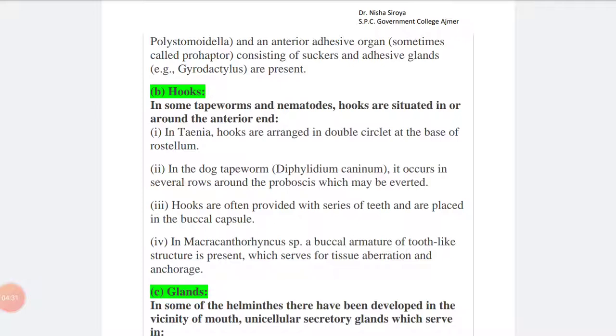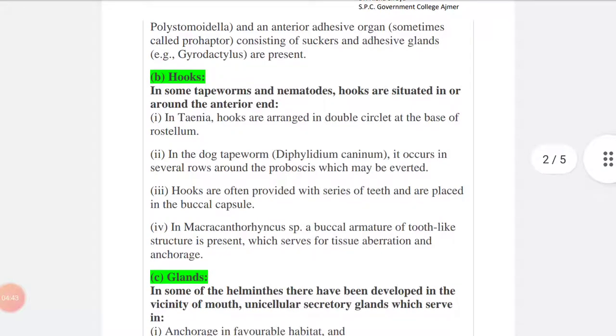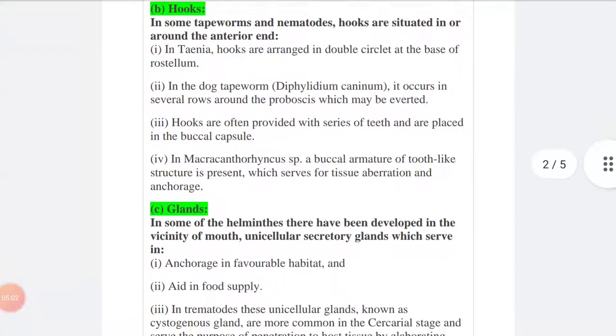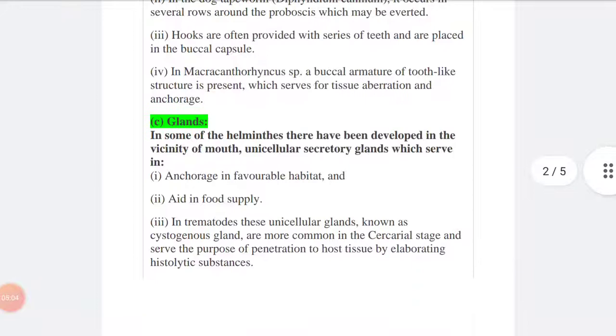Hooks are often provided with series of teeth and are placed in the buccal capsule, because hooks are a special structure which helps a parasite to attach to the body wall of the host. In some species, a buccal armature of tooth-like structure is present which serves for tissue abrasion and anchorage.